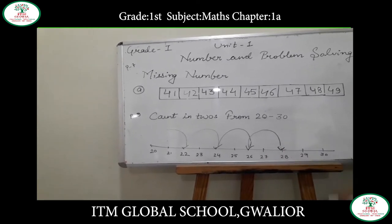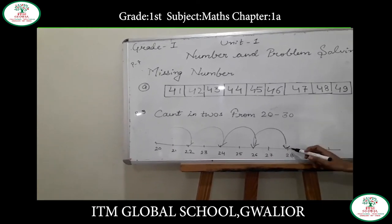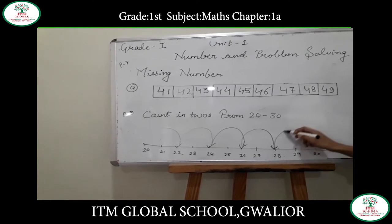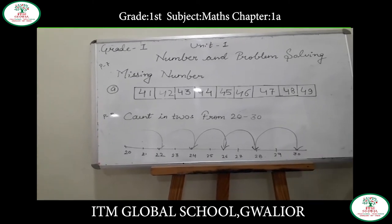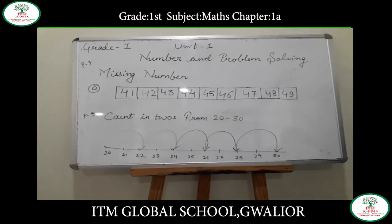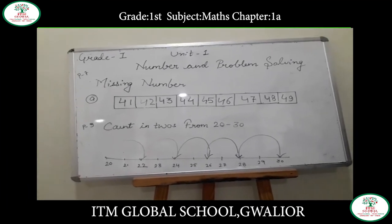So after 26, it will be 28. After 28, again skip one number and come to the next number, which is 30. So the counting in twos from 20 to 30 is complete.